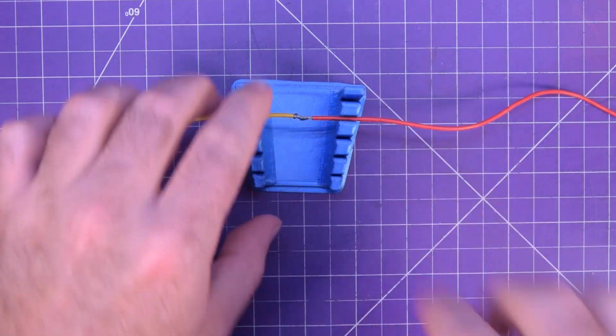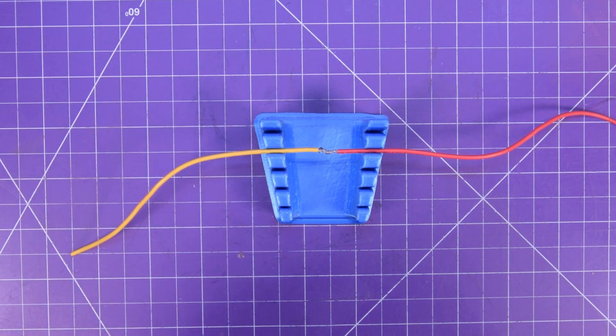And then you just press that down in there. Clean the tip of your iron off.